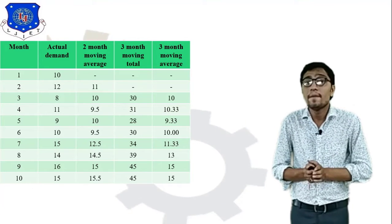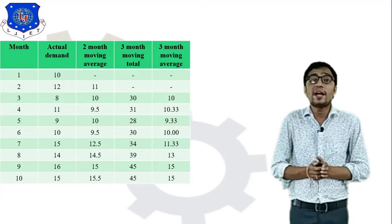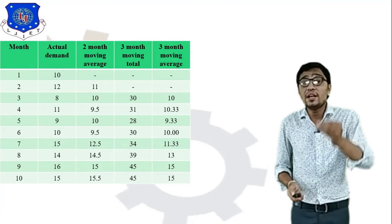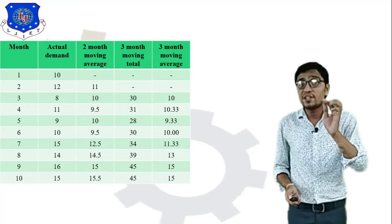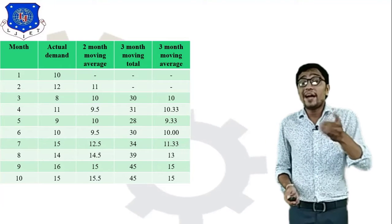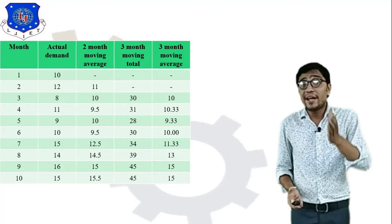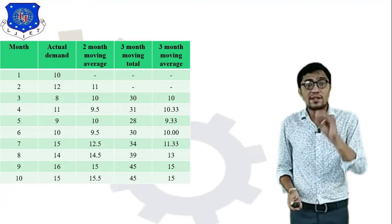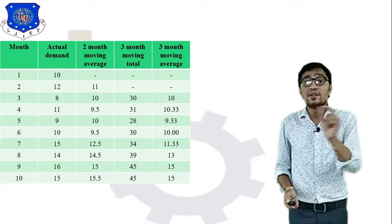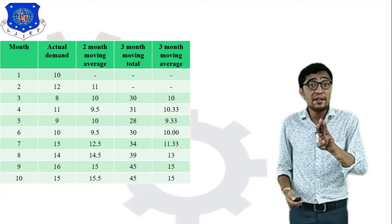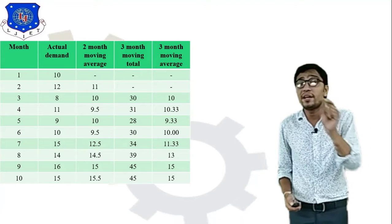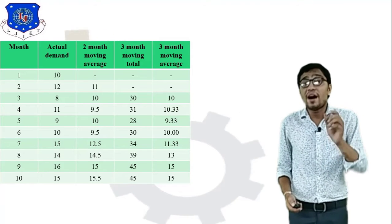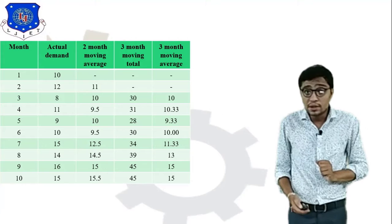Now for the three-month moving average, using the fourth and fifth columns. Take the first three months: actual demand values are 10, 12, and 8. So 10 + 12 + 8 = 30. I put 30 in month 3 for the three-month moving total. In months 1 and 2, I put a dash.